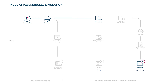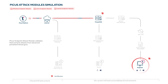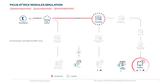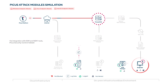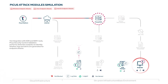The PICAS Endpoint Attack module validates that scenario attacks from advanced persistent threat groups are prevented and detected by endpoint security controls. Via integration with EDR and SIEM tools, PICAS security control validation performs detection analytics to identify whether logs and alerts were generated for endpoint attacks.